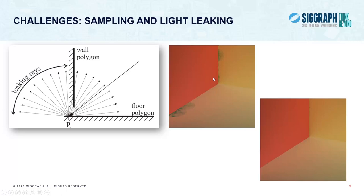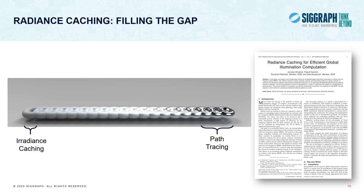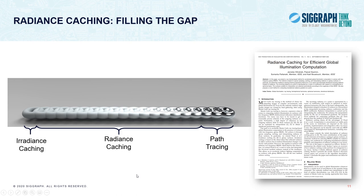Jaroslav's work centered a lot on trying to find a robust algorithm that would be able to simulate all kinds of light transport. He had on one side the irradiance caching algorithm working well enough on diffuse surfaces, and on very glossy surfaces, path tracing converges very fast. So his idea was: let's bridge the gap and propose something that will work everywhere in between — covering the full spectrum of glossiness.